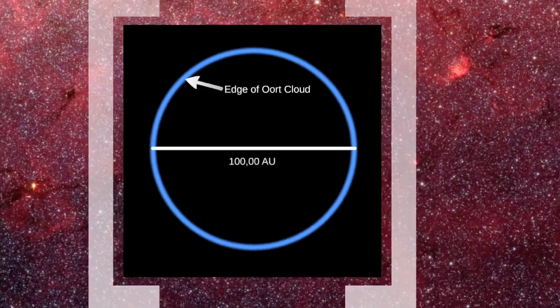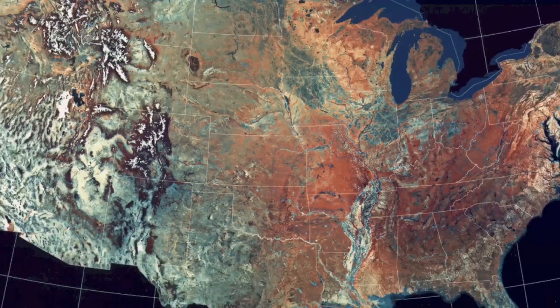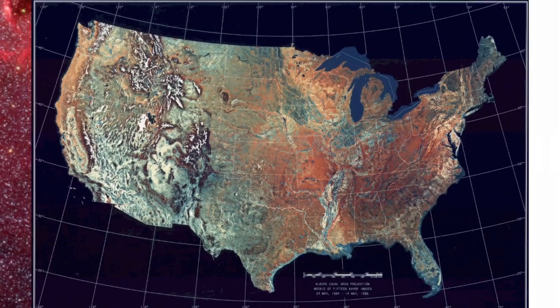To put this into perspective, imagine the solar system was the size of an American football field. At this scale, the Milky Way galaxy would be the size of the entire United States of America. If you zoomed out in a satellite image of the United States, there is no way to discern any detail so small as a football field, let alone any other human-made features.